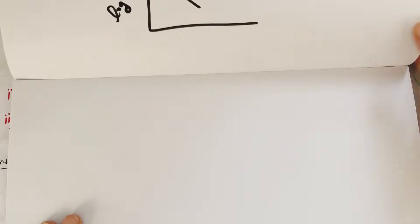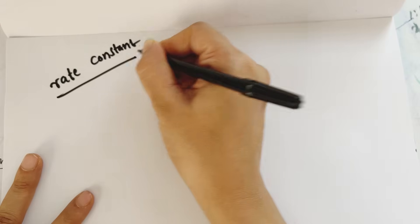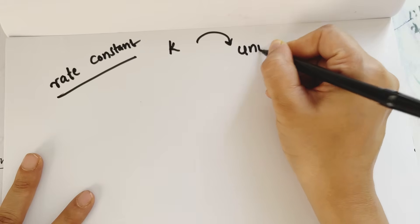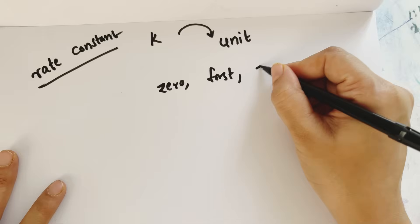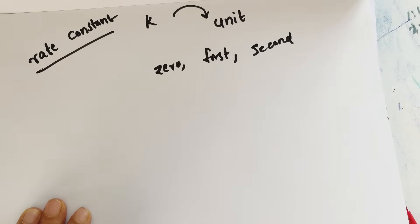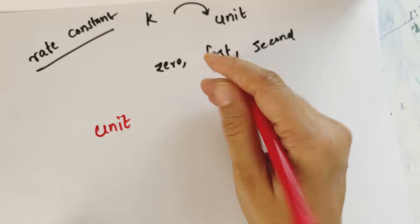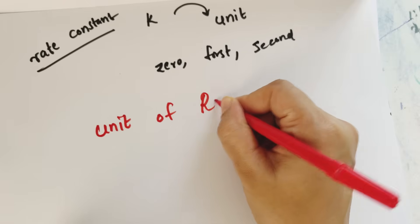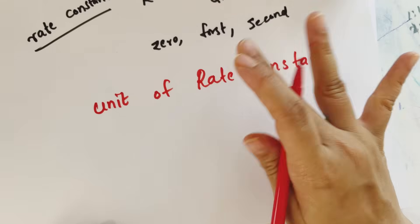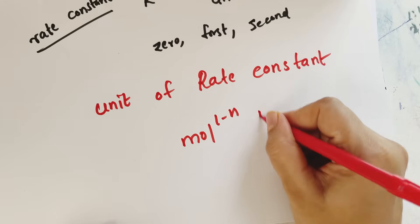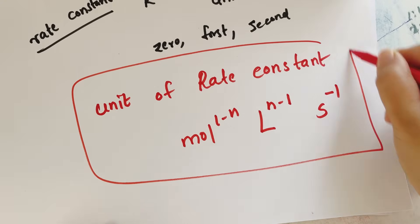Let's study the unit of rate constant. For zero order, the unit is mol/L/s. For first order, the unit is s⁻¹. You can study the general equation for unit of rate constant. For second order, you can derive it from the formula.